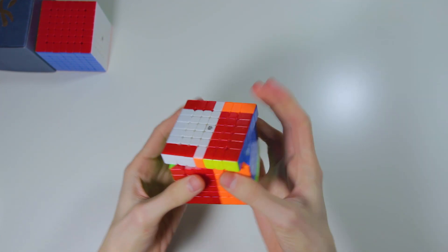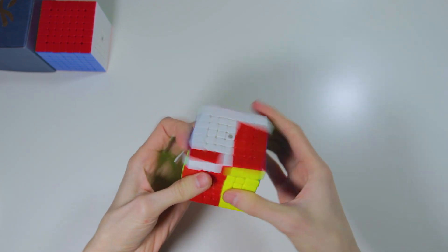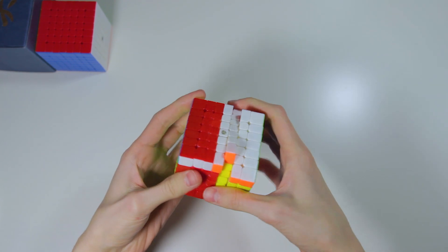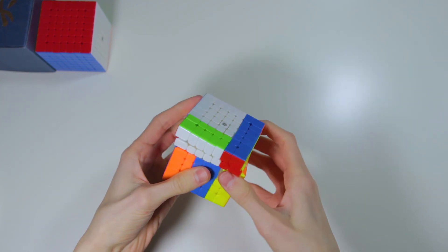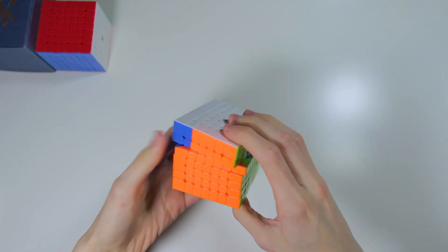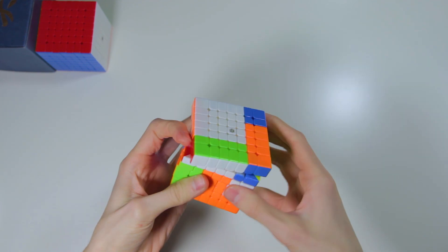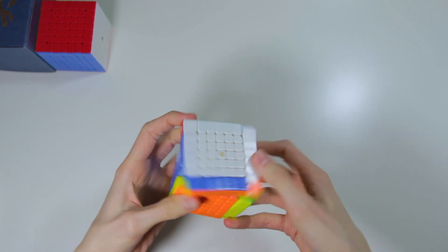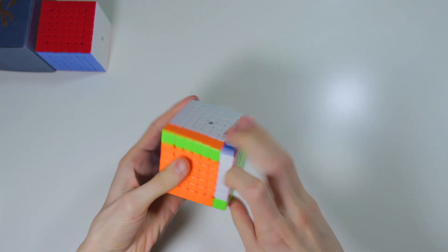Unfortunately, the Spark does feel a little bit less stable than the Aofu GTS, and I could see there being a potential problem with popping in solves, so I'll have to see if that does become a major problem with this cube. Anyway, I will do a bit of work with these cubes over the next week or two, and hopefully I'll have a comparison between these two 7x7s and the Haze 7M out soon.